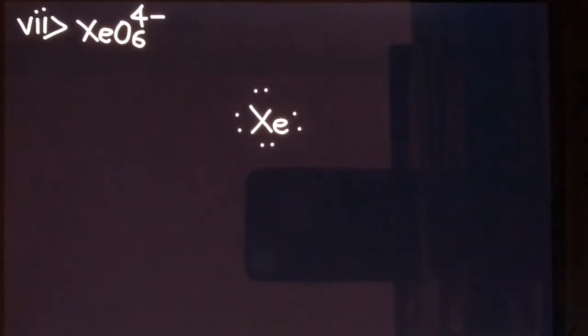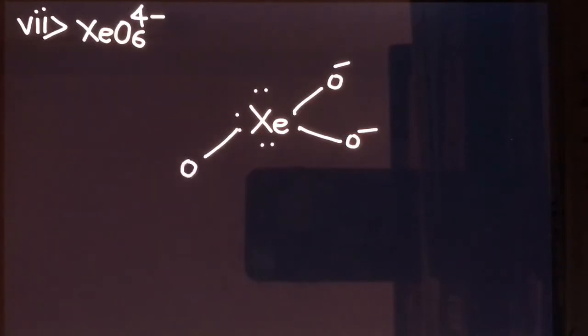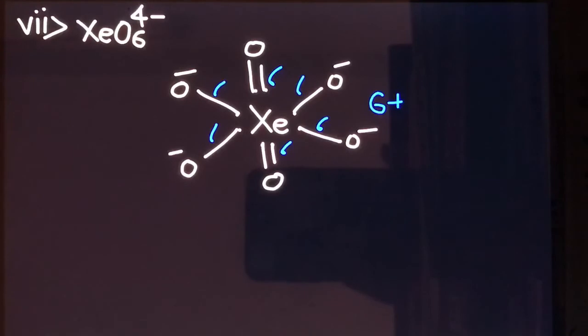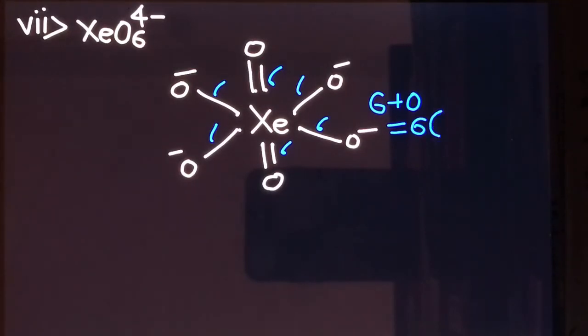Now let's find the hybridization of xenon in the perxenate anion XeO₆⁴⁻. Xenon has eight outermost electrons. It is forming bonds with six oxygens, and with a 4⁻ charge, four oxygens are attached with single bonds and two oxygens are attached with double bonds. The total number of sigma bonds is six, and there is no lone pair on xenon because all eight electrons have been used in bonding. So the steric number is six and the hybridization will be sp3d2.